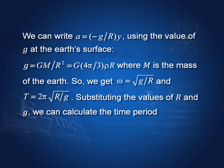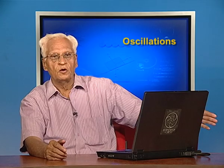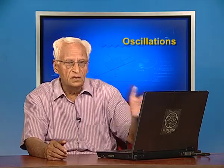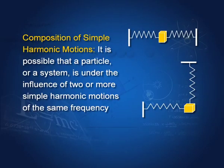Using g = GM/R² to simplify, the time period T = 2π√(R/g), where R is the radius of the earth and g is the acceleration due to gravity at the surface of the earth. Substituting values gives the time period numerically. It is possible that a particle or system is under the influence of two or more simple harmonic motions.